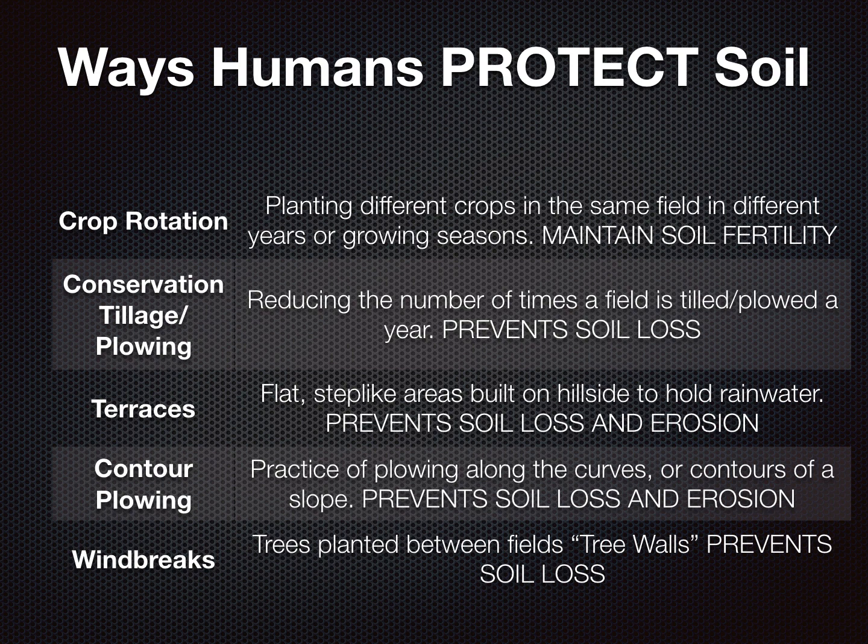Crop rotation basically means what it says — they rotate the crops each year with different plants. If you keep planting the same thing in the same spot, you're going to take the nutrients, minerals, and good things out of that soil that a corn plant, for example, needs. The big thing about crop rotation is it maintains soil fertility.